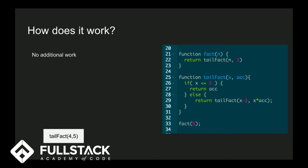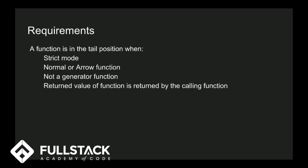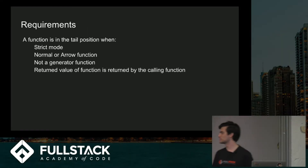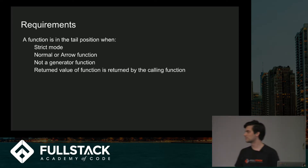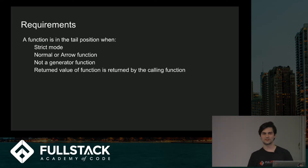Tail recursion reduces the stack space from O(N) to constant space — constant memory complexity. Eventually you get the value. There are some requirements in order to do this: you have to use strict mode, you have to use a normal or arrow function — you can't use a generator function. The return value of the function is returned by the calling function.